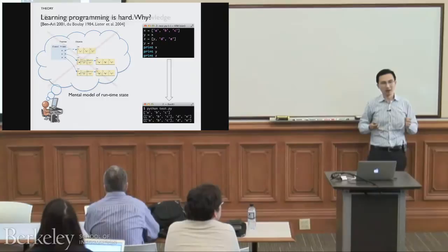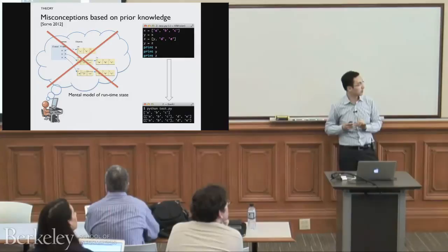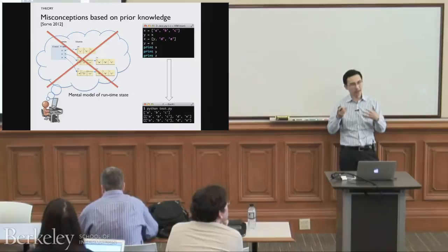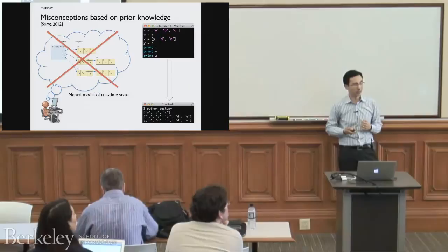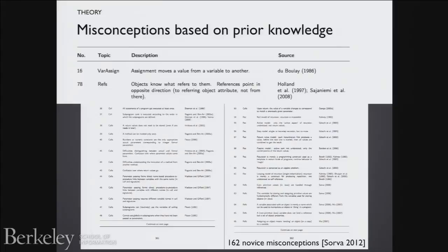Learners bring all sorts of misconceptions into their first programming class, based on prior knowledge of mathematics, natural language, or folk knowledge about how computers work. One colleague, Sorva, did a dissertation where in the appendix he cataloged 162 of these misconceptions, citing primary sources. Two examples: one is that assignment moves a value from one variable to another, whereas in Python it copies; another is that objects have a pointer to the thing that points to them, which is not true.